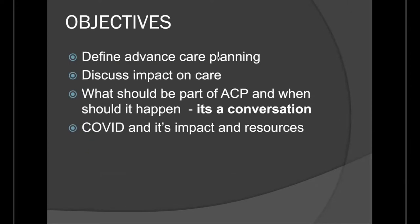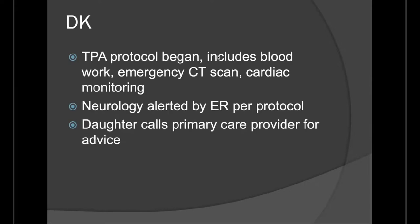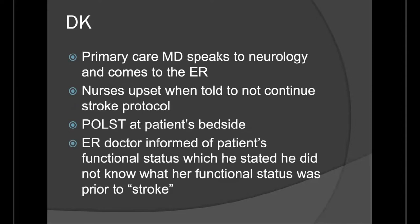I want to talk about a patient of mine who showed up in the emergency room. She was 84 years old, had a history of all of the above, and had a POLST which said comfort care. She had been in hospice in the past. The assisted living facility thought she was having a stroke and sent her to the hospital. A TPA protocol began — blood work, emergency CT scan, cardiac monitoring, neurology was alerted — but nobody had talked about this patient's functional status, even though the POLST had been right at her bedside.